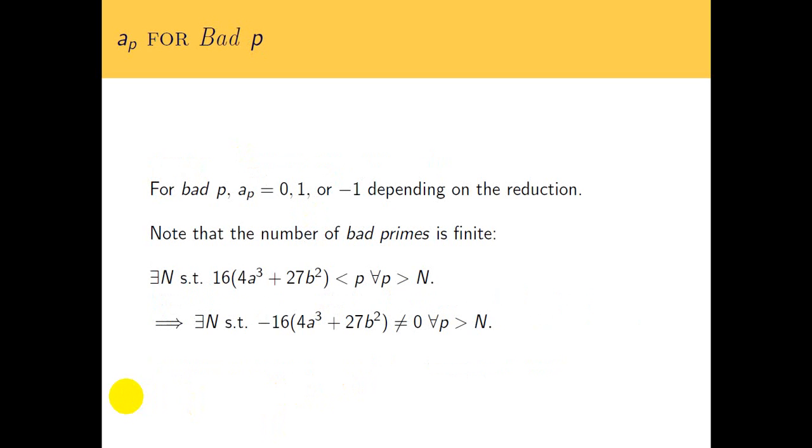We talked about how to get the a_p's for the good p's, but how about for the bad p's? The a_p's for bad p's are defined to be 0, 1, or -1, depending on the type of reduction. Remember what we're talking about with bad p's is when you reduce that discriminant mod p, you get zero. That's going to mean that our elliptic curve is going to have singularities. We're not going to call that an elliptic curve. It's going to have some type of singularity, like a node, which is a self-intersection, or a cusp, which you can kind of imagine that shape.